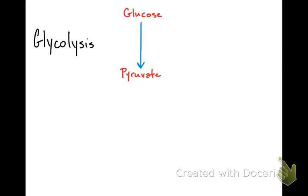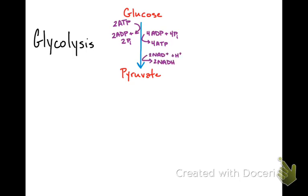Looking at aerobic respiration in more detail: with glycolysis, you feed in two ATP — you invest energy to get it started — but you get four ATP out, so you gain two total. You also get an energy-carrying coenzyme called NADH, a close molecular cousin of NADPH from photosynthesis but without the extra phosphate. And you get two pyruvate because you've split the glucose in half.